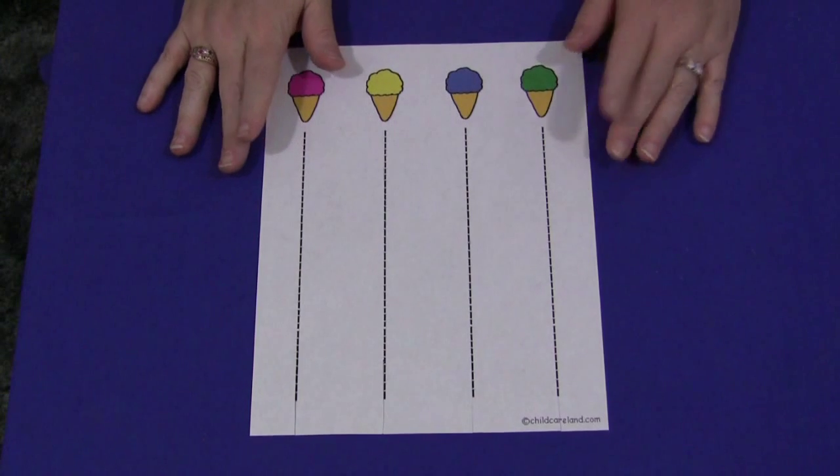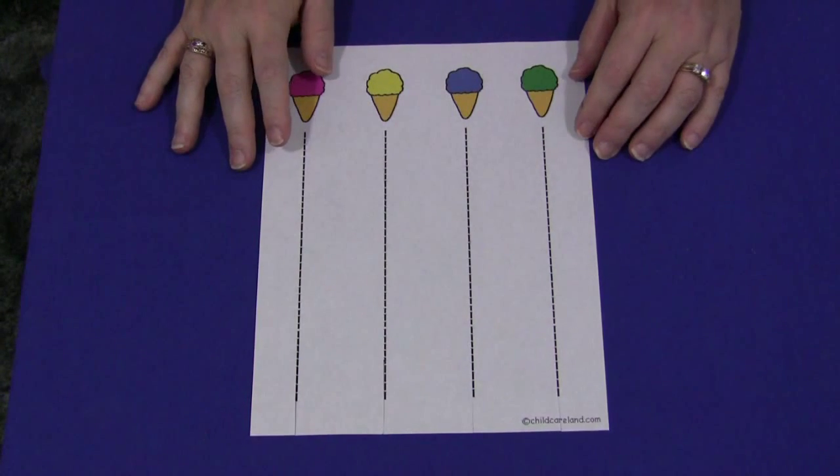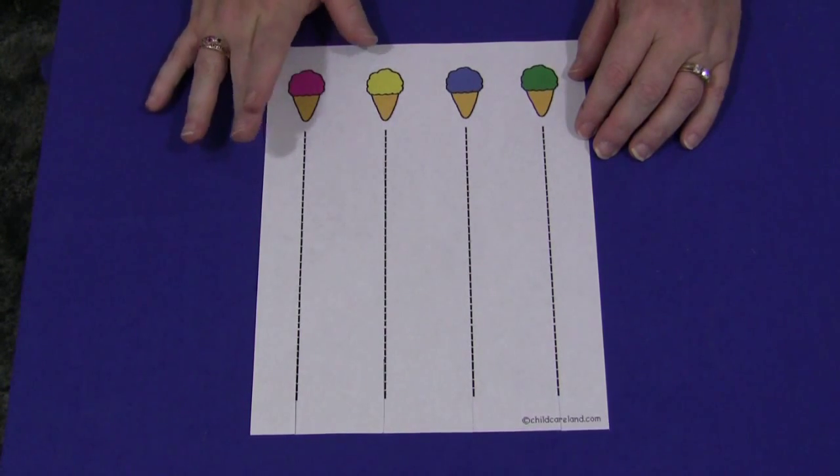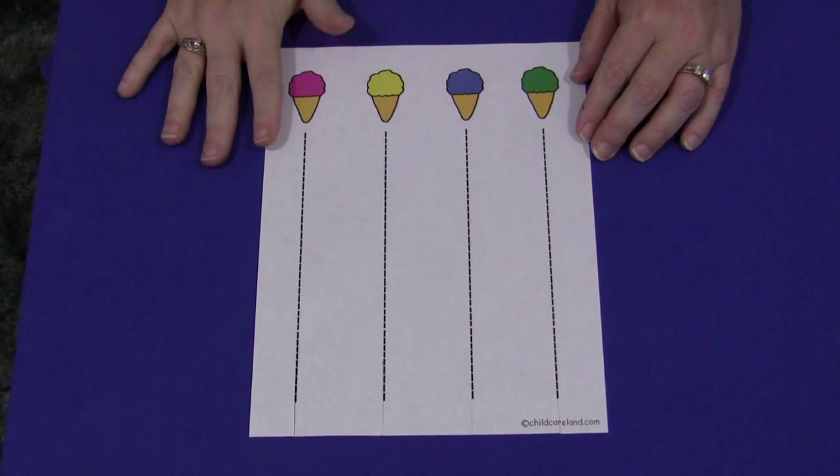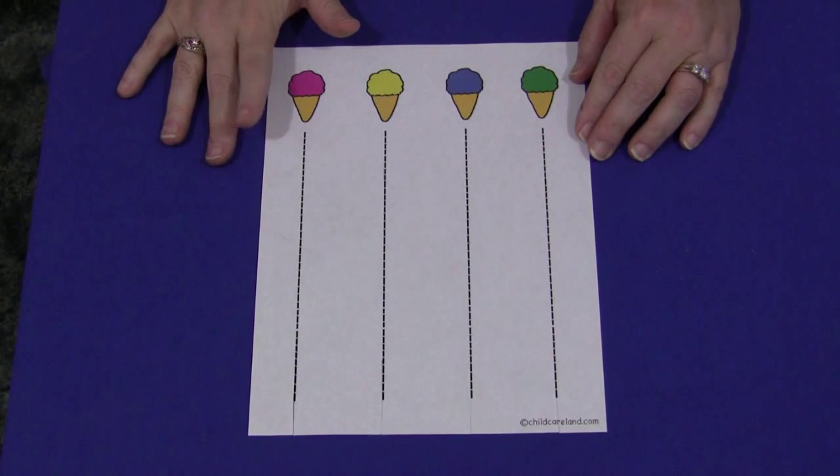This is a sheet that you can find on my website at ChildCareLand.com underneath the video section. It comes in both black and white as well as color, so feel free to choose whichever one you want and make as many copies as you want.